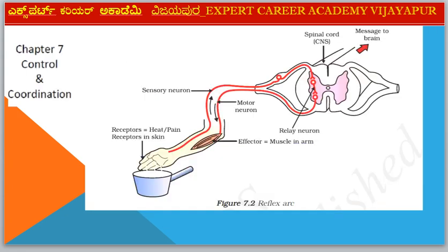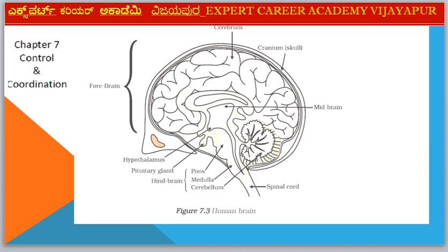Next diagram — Chapter 7: Control and Coordination. Diagram: Reflex Arc. Parts include Relay Neuron, Sensory Neuron, and Motor Neuron.